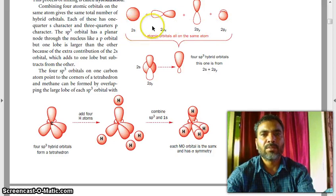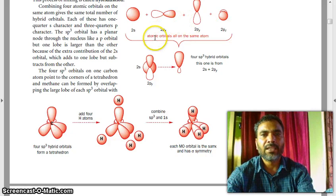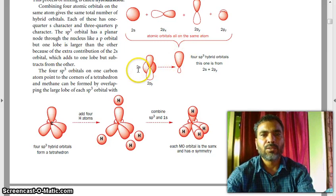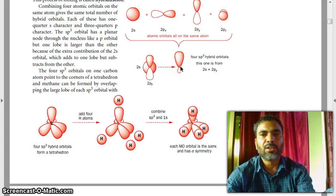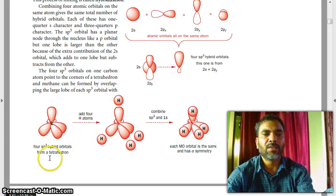These 2S plus 2Px plus 2Py plus 2Pz atomic orbitals all on the same atom. I repeat, this 2S, this 2Px, this 2Py, and this 2Pz combined atomic orbitals all on the same atom. Then 2S, 2Px, 2Py, 2Pz forming four SP3 hybrid orbitals. Overall, four SP3 hybrid orbitals form a tetrahedron.